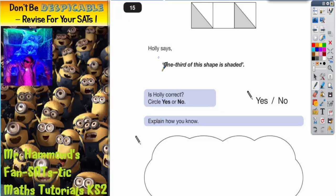Question number 15 says Holly says one third of this shape is shaded. Is Holly correct yes or no? Well there's actually a couple of ways we could do this. We can't just circle yes or no and have a guess because even if we are right with a guess we've got to do some sort of explanation.